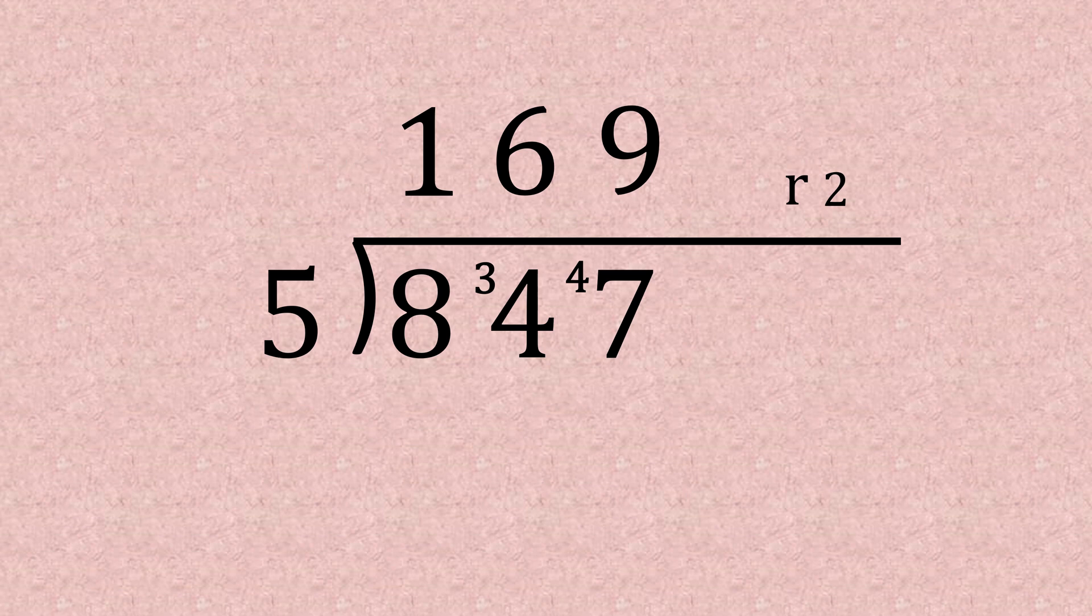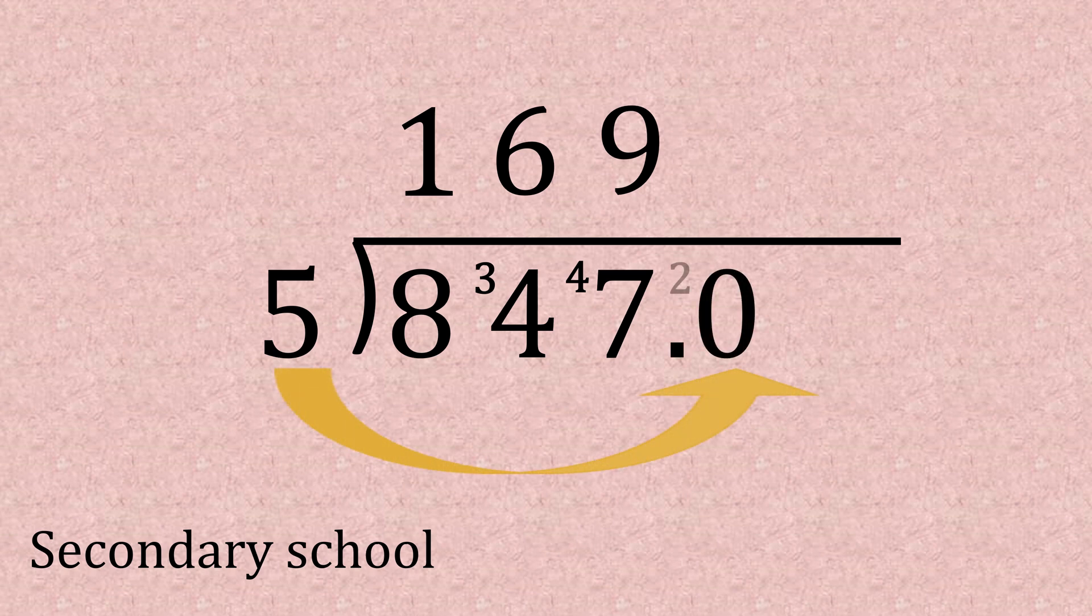Now in primary school it'd be okay to write that, but for secondary we need to keep going to exhaust all the numbers. So we need to add zeros under our bus stop and carry the two, so that gives us five into 20, which we know goes four times, and that's the end of the workings out. So the answer is 169.4.